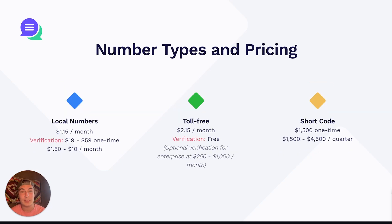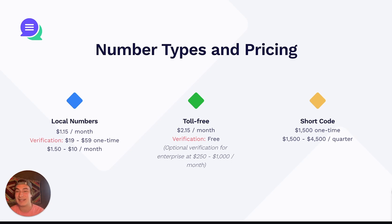So first up, we have number types and pricing. There are three different number types available through Twilio. First is local numbers. These are going to cost you $1.15 per month to have the number. Verification is going to entail anywhere from $19 to $59 in one-time fees, and then to keep the verification active, it's going to be anywhere between $1.50 and $10 per month.